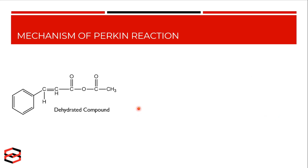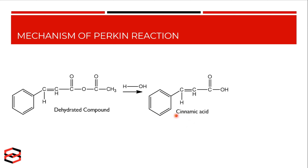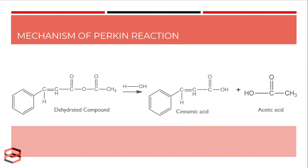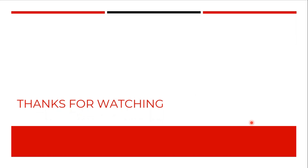This dehydrated compound undergoes hydrolysis and produces cinnamic acid. Cinnamic acid is our end product, and the byproduct is acetic acid. So the net result is that cinnamic acid can be produced by the reaction of an aldehyde and acetic anhydride in the presence of sodium acetate or potassium acetate. Thanks for watching.